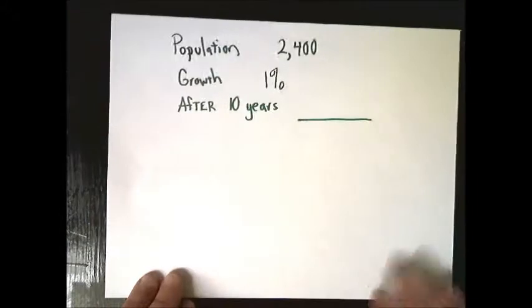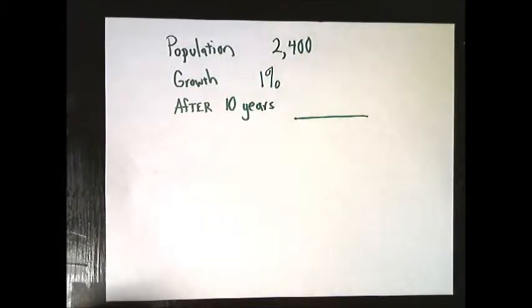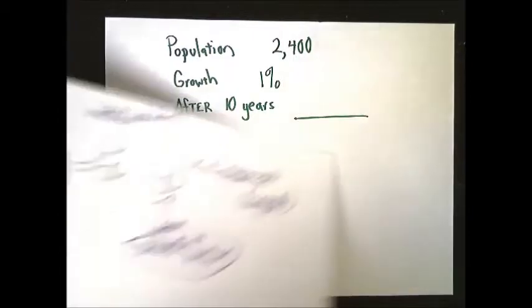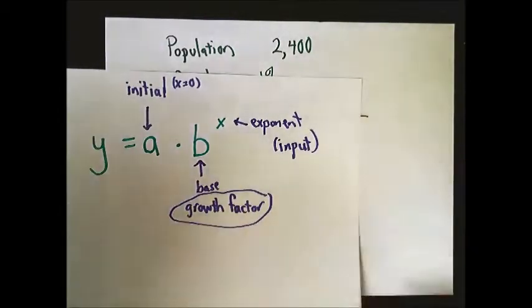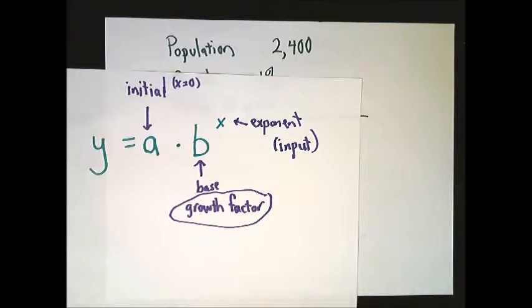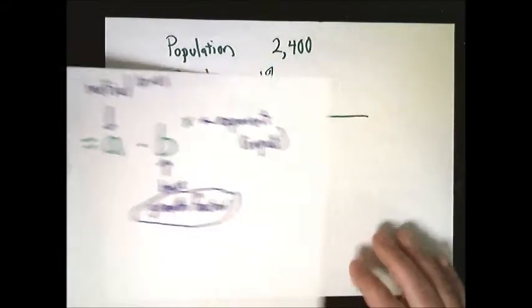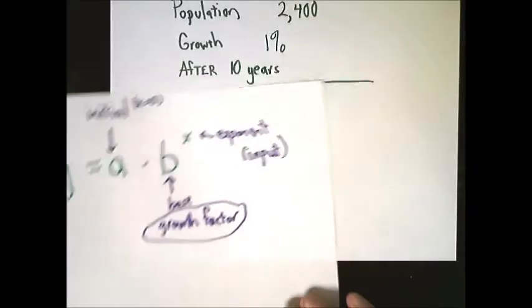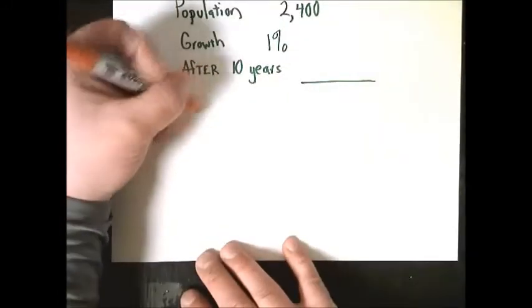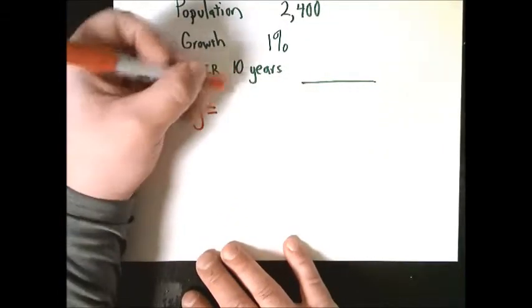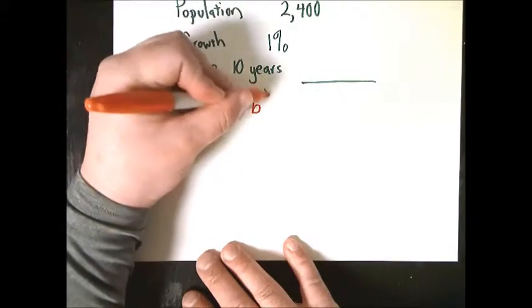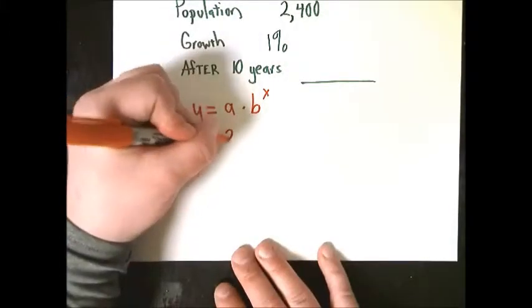The first one is about population growth. There's a population of 2,400, it has a growth rate of 1%, and I want to know after 10 years what the population is likely to be. I'm going to go back to the equation. Most of the time, this is the type of thing that would show up in the problem itself. So I'm going to set this up. My a value, of course, is my starting point, so 2,400.